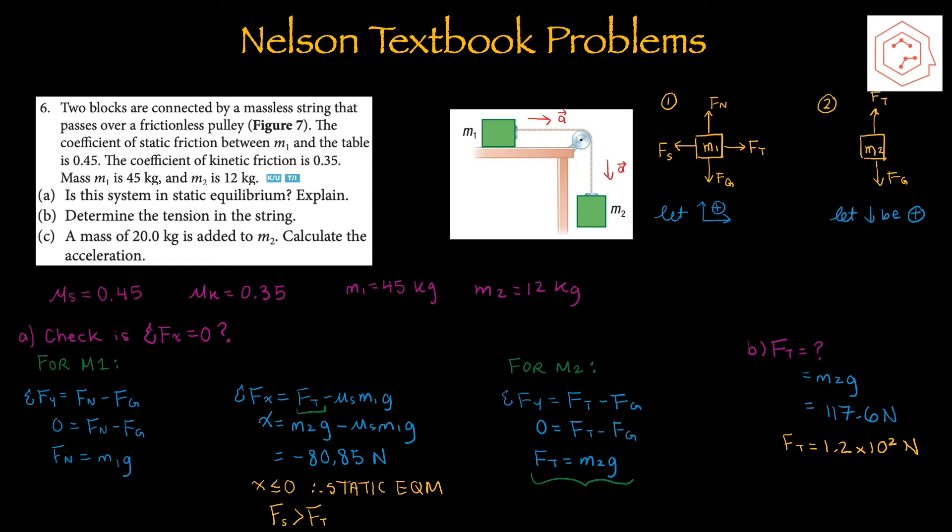Part B asks to determine the tension in the string. We already solved the formula: tension = m2g. Plugging in the numbers gives 1.2 × 10² N when applying two significant figures.